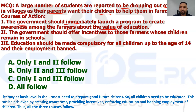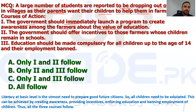The first course of action is that the government should immediately launch a program to create awareness among the farmers about the value of education. So the government needs to launch a program creating awareness among farmers about the value of education. This is an awareness campaign, and of course this is a right course of action.